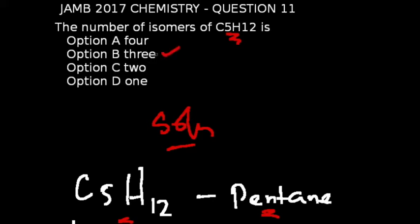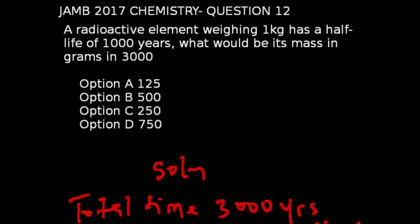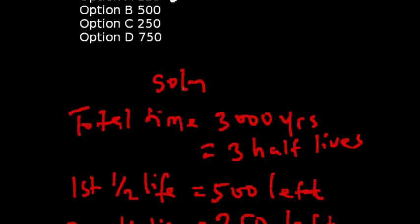JAMB 2017 chemistry question number 12: The radioactive element with one kilogram has a half-life of 1,000 years. What will be its mass in grams in 3,000 years? The correct answer to this question is option A, which is 125 grams of the original value. The total time in years is 3,000 years, that is equal to three half-lives.